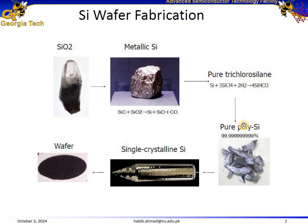Then, the trichlorosilane in this step is converted to polycrystalline silicon. Trichlorosilane, as shown over here, is decomposed at high temperatures to create ultra-pure polycrystalline silicon.